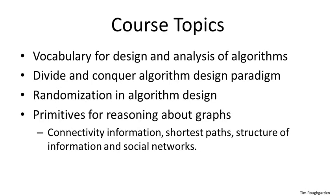Recall that a graph data structure has, on the one hand, vertices, and on the other hand, edges which connect pairs of vertices. Graphs model, among many other things, different types of networks. So even though graphs are much more complicated than mere arrays, there are still a number of blazingly fast primitives for reasoning about their structure. In this class, we'll focus on primitives for computing connectivity information and also shortest paths. We'll also touch on how such primitives have been used to investigate the structure of information in social networks.